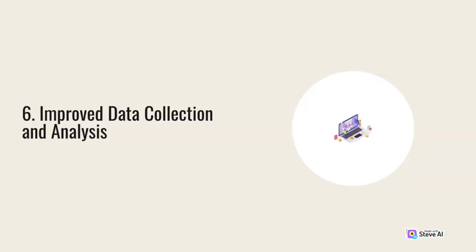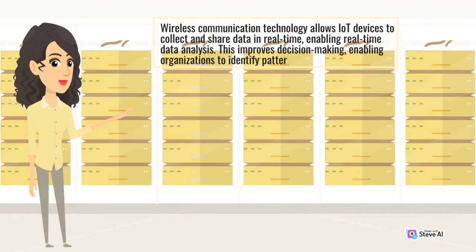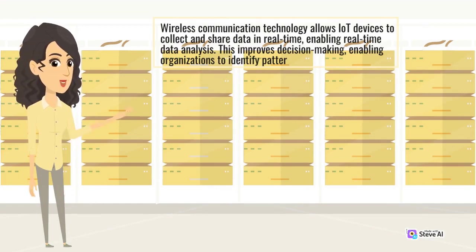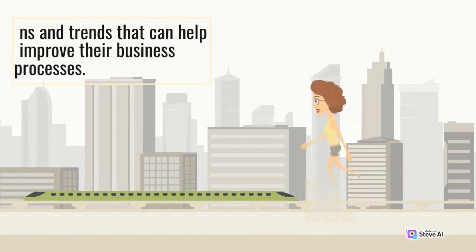6. Improved data collection and analysis. Wireless communication technology allows IoT devices to collect and share data in real-time, enabling real-time data analysis. This improves decision-making, enabling organizations to identify patterns and trends that can help improve their business processes.